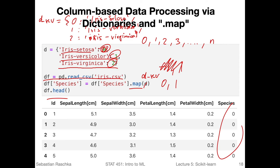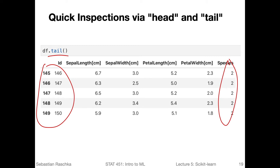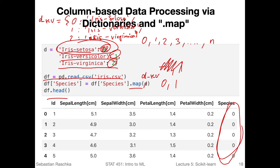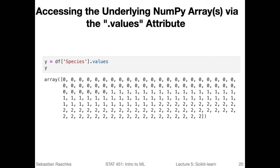On the previous slide I was showing you the first five rows, where you could only see the setosa flowers transformed. To show that it also handled the other flowers, using the tail command for the last five rows, you can see the last 50 rows are iris virginica, which were assigned class label 2. So the last five rows were also transformed, and correspondingly the rows in the middle, which were iris versicolor, were also transformed.